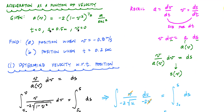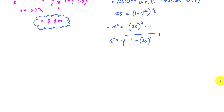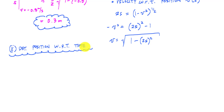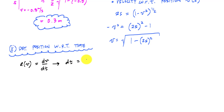We answered Part A: position when velocity is negative 0.8 meters per second. Now for Part B: the position when t equals 0.2 seconds. We need a relationship of position with respect to time. One approach is to start with the acceleration as a function of velocity, set it equal to dv/dt, integrate — dt equals dv over a(v) — to get time with respect to velocity.